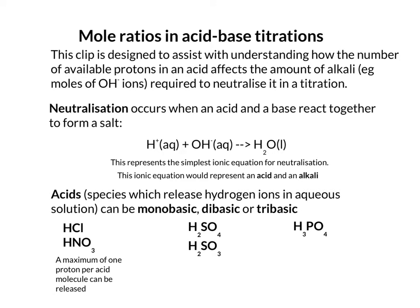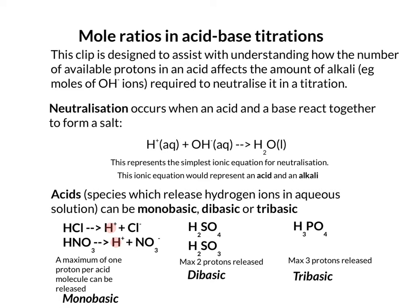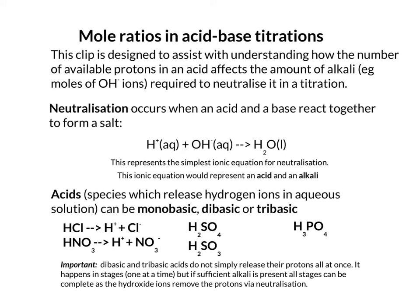Starting with monobasic acids: a maximum of one proton per acid molecule can be released. From the dissociation, you can see that one hydrogen is released. For dibasic acids there's a maximum of two protons released, and for tribasic acids a maximum of three. Importantly, dibasic and tribasic acids don't release all their protons simultaneously — it actually happens in stages, with each proton released by a slightly different equation.